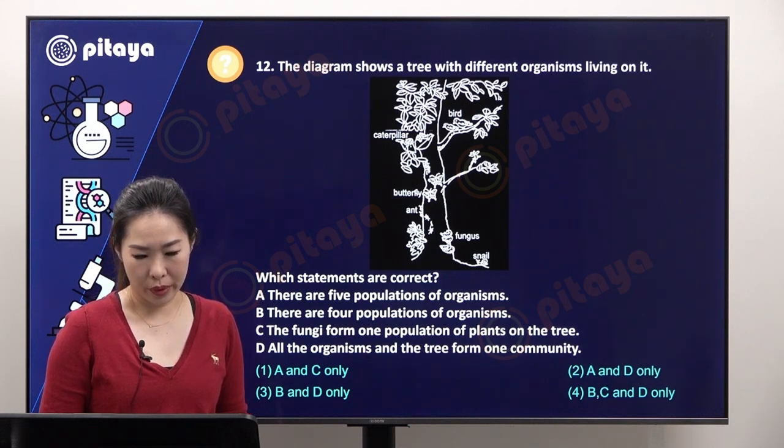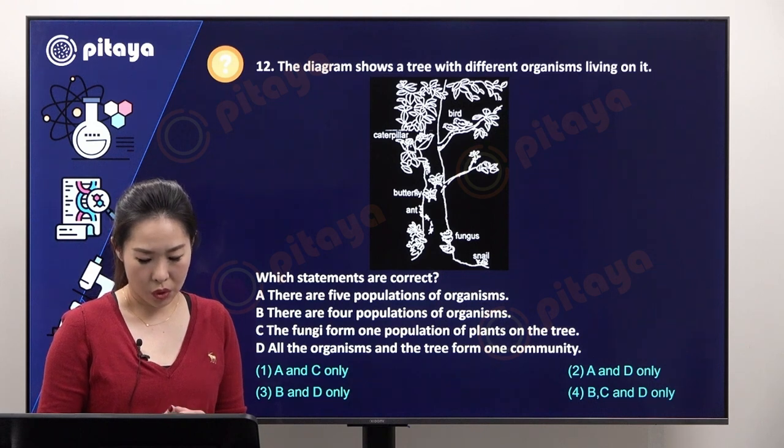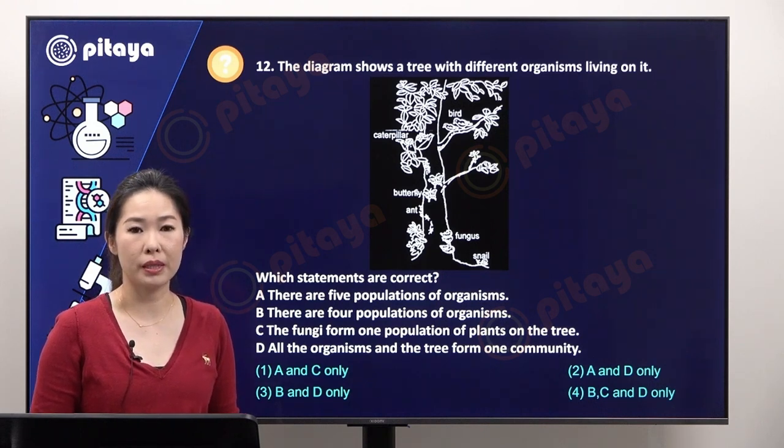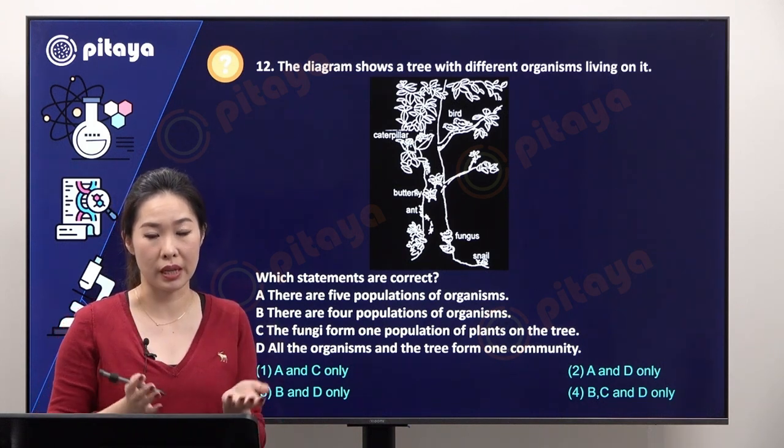Let's go on to question 12, where more students make mistakes on this question. This question is on a recent topic in P6 on living together, being able to count how many populations of organisms are present in the habitat.